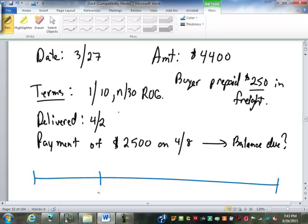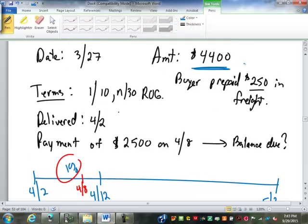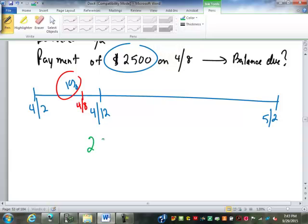So because of the ROG, our timeline is going to start on April 2nd. So 10 days would put us on April 12th. Then of course the 30 days would put us on May 2nd. And we get the 1% discount because our payment is made on the 8th. So now we don't have to take the $250 out of the $4,400 because it's not part of that amount because of the way this is worded. But we do have to take the $250 out of our partial payment of $2,500 before we find a discount. So $2,500 minus $250 is $2,250 that's going to get applied towards the merchandise. Now the freight is completely paid, we don't have to worry about that anymore.